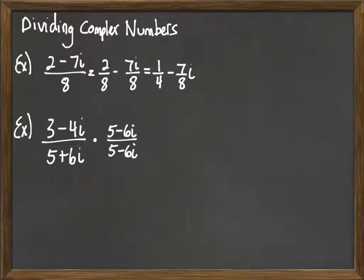That way, when we multiply it out on the bottom, we'll actually get a real number. When we multiply it out at the top, well, we're multiplying two complex numbers, so we'll get some complex number. That will then give us a problem that is like the first one. So let's begin.